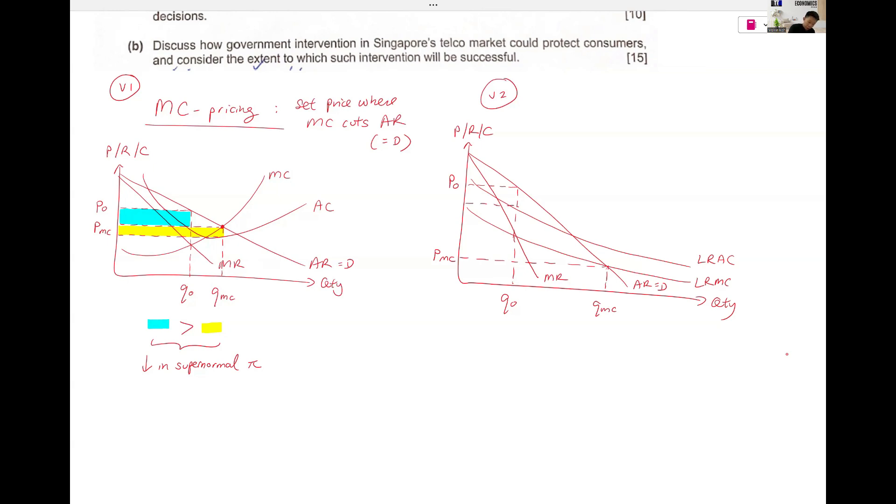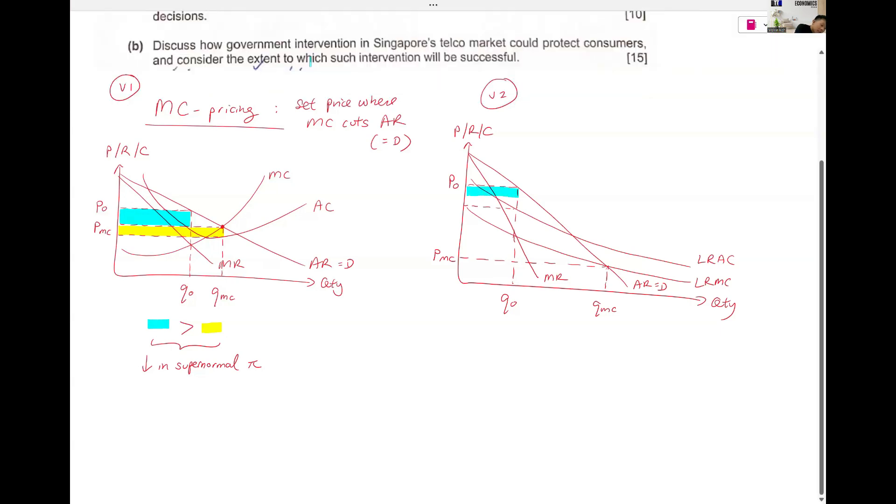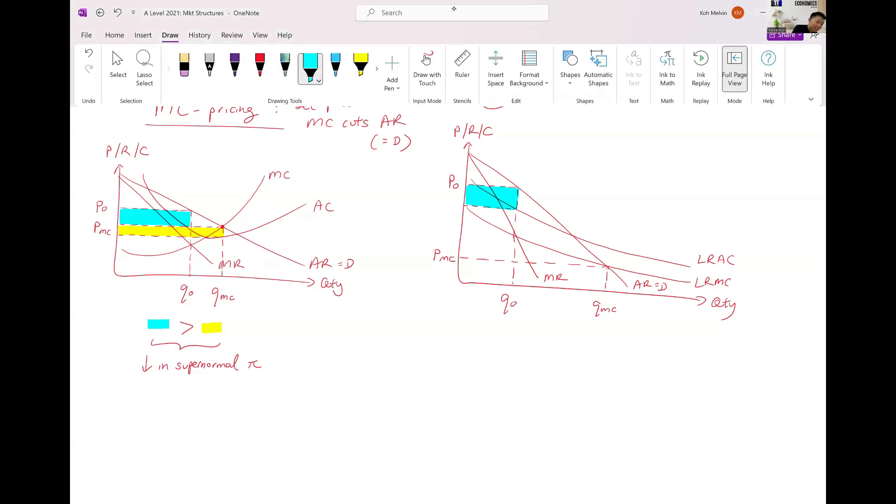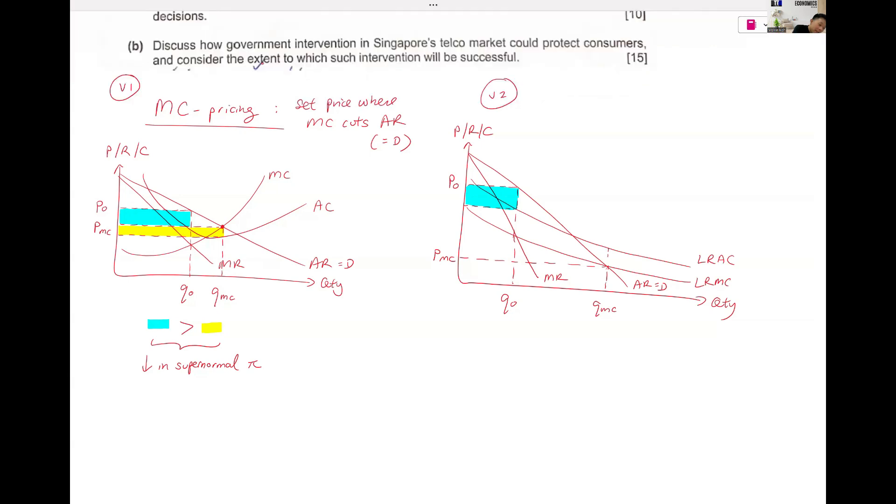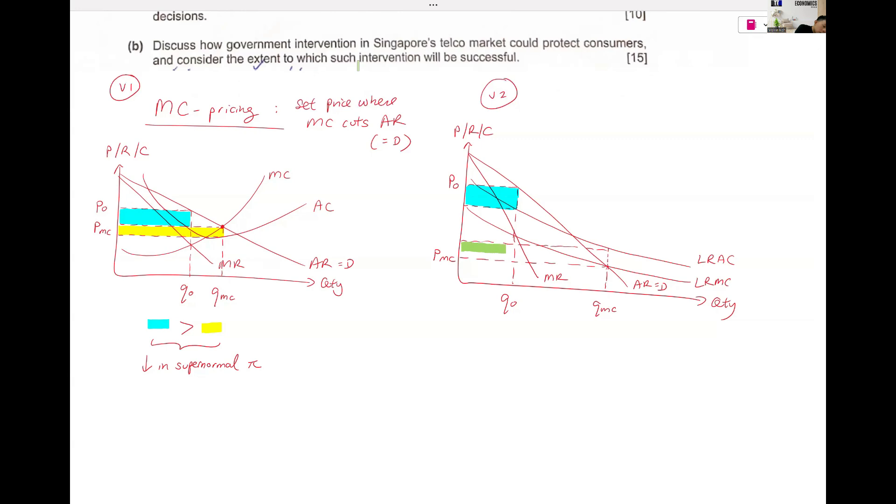So originally your firm was still able to make supernormal profits. So it was able to make supernormal profits, but now it's a loss. After that, you are making a loss.